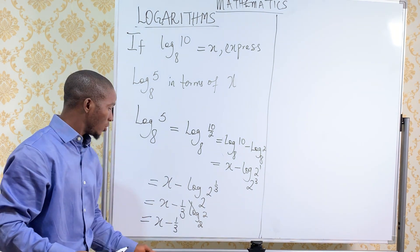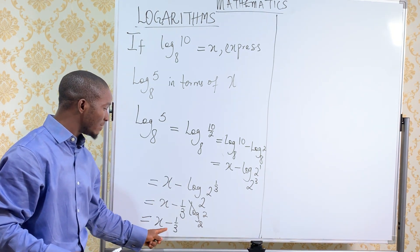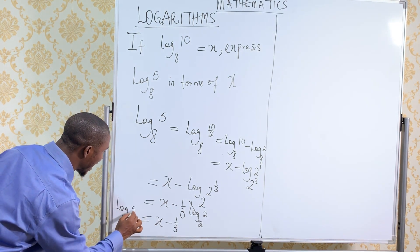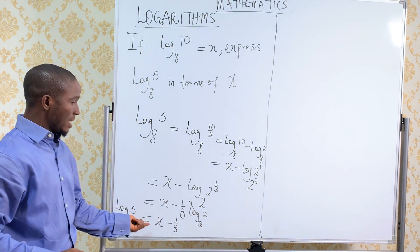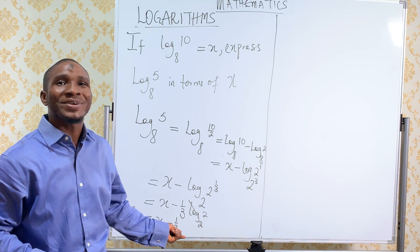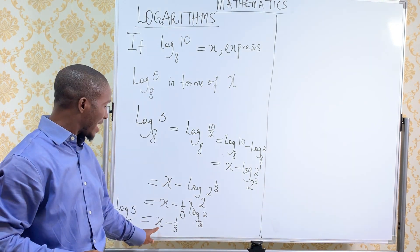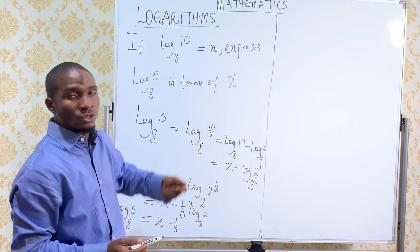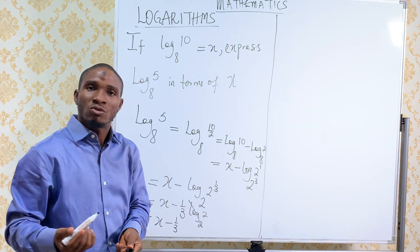So it's gone. We now have it to be x minus 1 over 3. It means that log 5 base 8 has been expressed in the form of x as x minus 1 over 3. And that's what the question is asking us to do. Thank you. We'll meet in our next class.